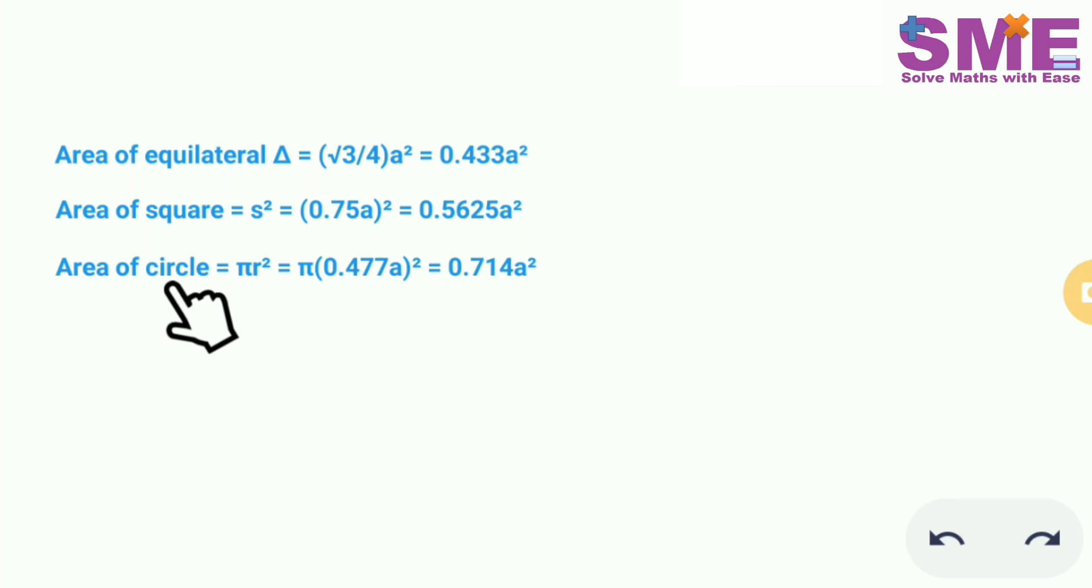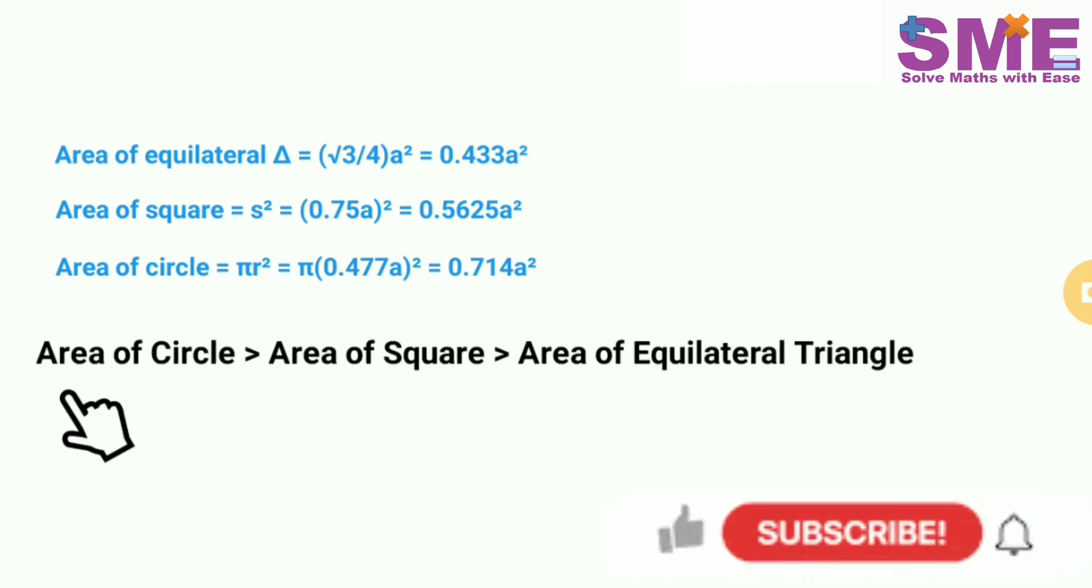Similarly we get the area of circle equal to πr² in terms of a as 0.714a². So the area of circle is greatest in all these three figures.